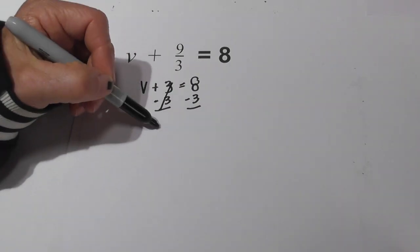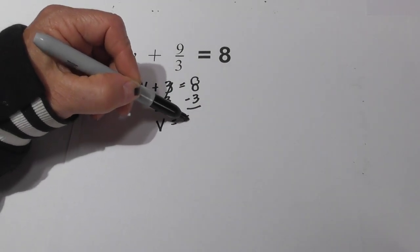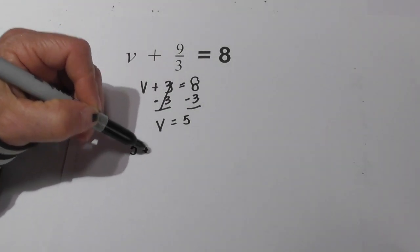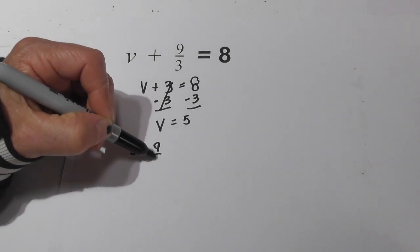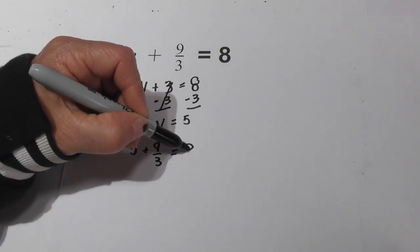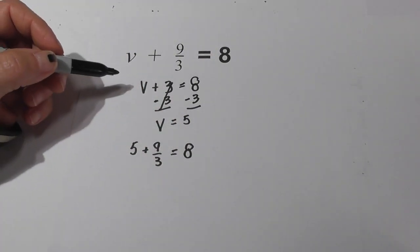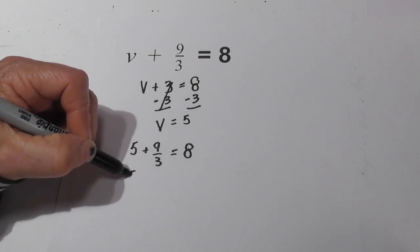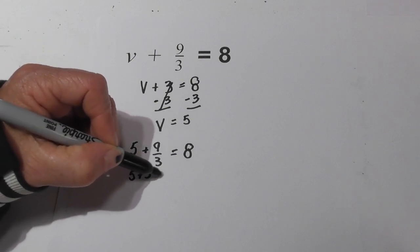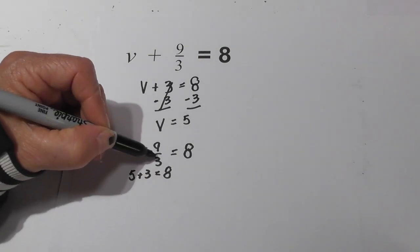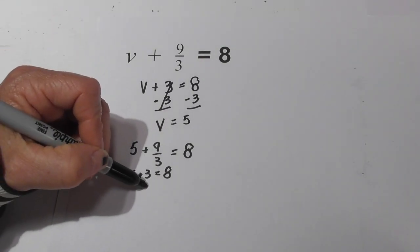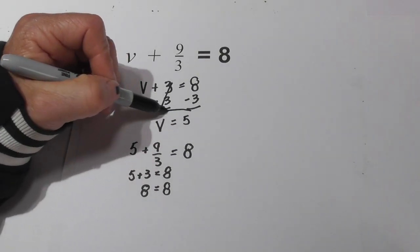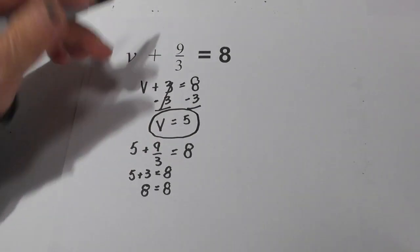These cancel, bring down the v and that equals 5. Now let's plug this in. We have 5 + 9/3 = 8. Now again what I'm going to do is reduce this improper fraction. So we have 5 + 3 = 8 because 9 divided by 3 is 3 and 5 + 3 = 8. So the answer is v = 5.